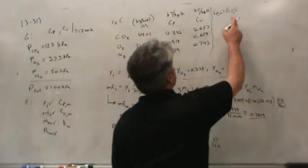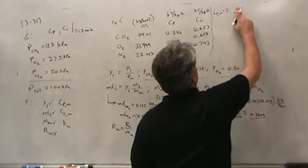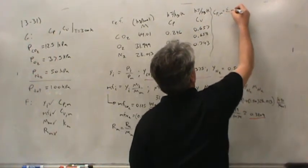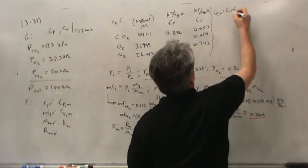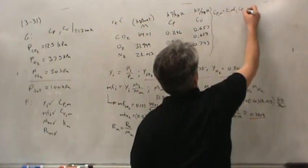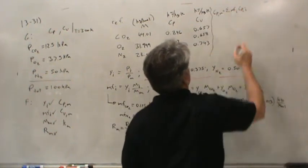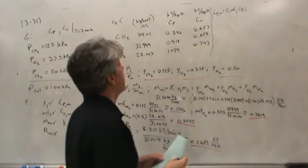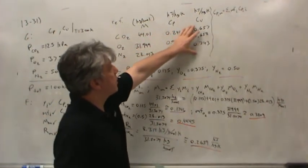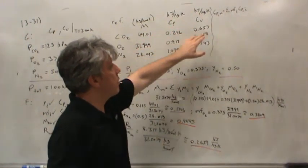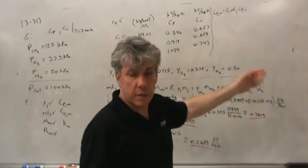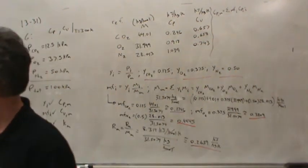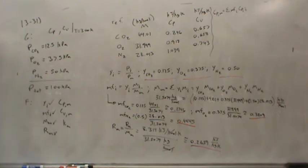I've got all my heat capacities in terms of mass. So I should have written the mass fraction multiplied by the heat capacity of that particular species — because when dealing with heat capacities on a mass basis, you use mass fractions, not mole fractions.